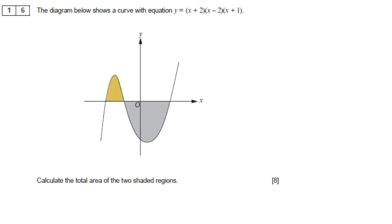To work out the area of the first region, coloured in yellow, we integrate the curve between two values which we'll label as a and b. So we write down the integral of (x plus 2)(x minus 2)(x plus 1) between b and a.